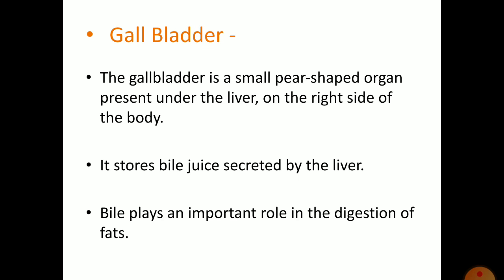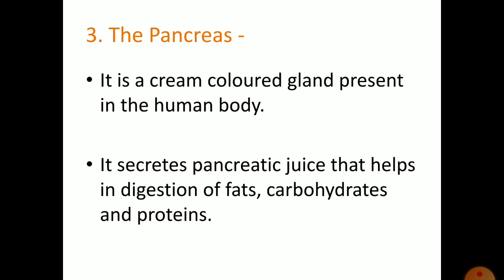The gallbladder is a small pear-shaped organ present under the liver on the right side of the body. It stores bile juice secreted by the liver, and bile juice plays an important role in the digestion of fats. The third gland is the pancreas, a cream-colored gland that secretes pancreatic juice, which helps in the digestion of fats, carbohydrates, and proteins.